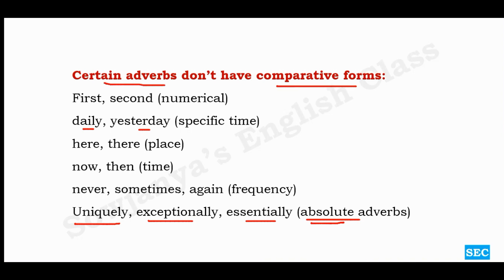So, this is briefly about our comparison of adverbs lesson. We have three degrees of comparison: positive degree — used when there is no comparison; comparative degree — used when only two things are compared; and superlative — used when more than two things are compared. We also discussed the ER/EST and more/most rule, irregular adverbs, and exceptions that have no comparative forms.